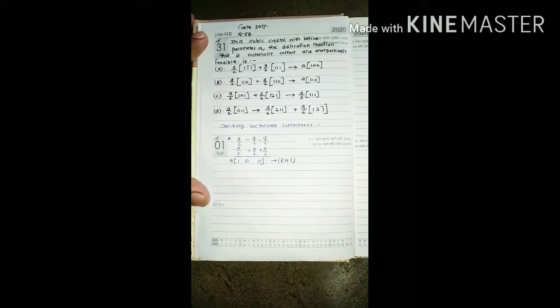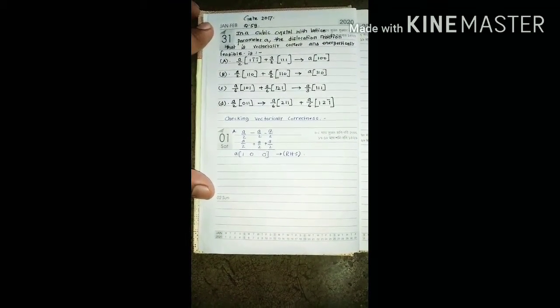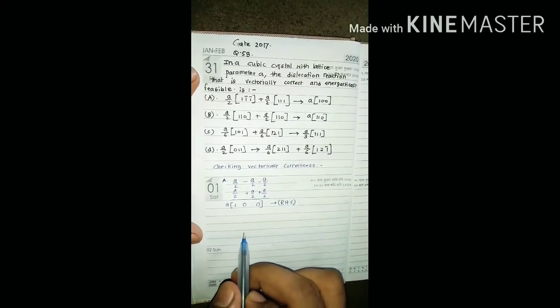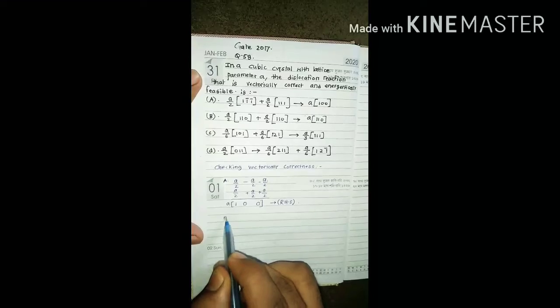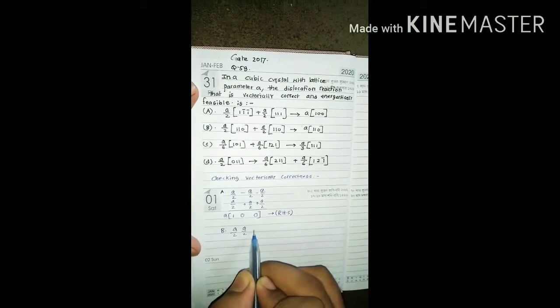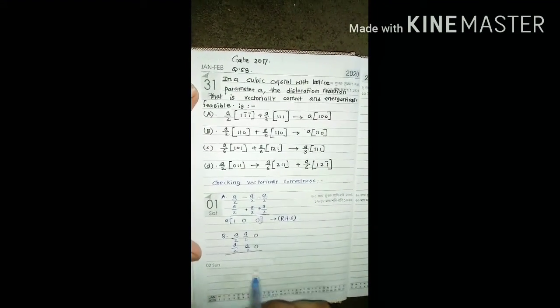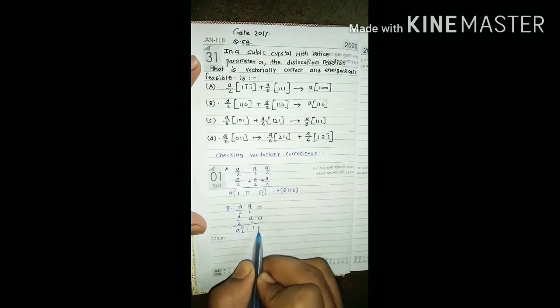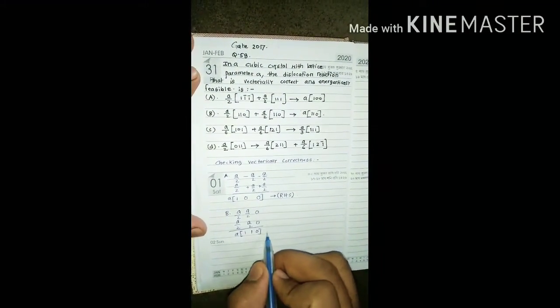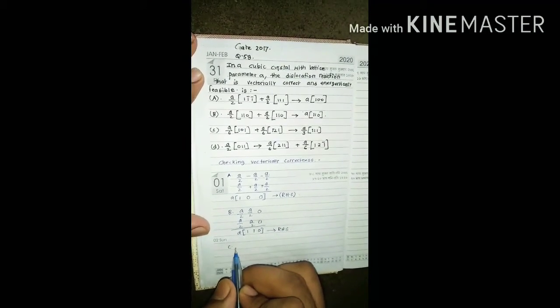We are going to do same for option B. You can check that option B right hand side, and here it is coming the same as our right hand side, so it is also vectorically correct. We are going to check for option C.